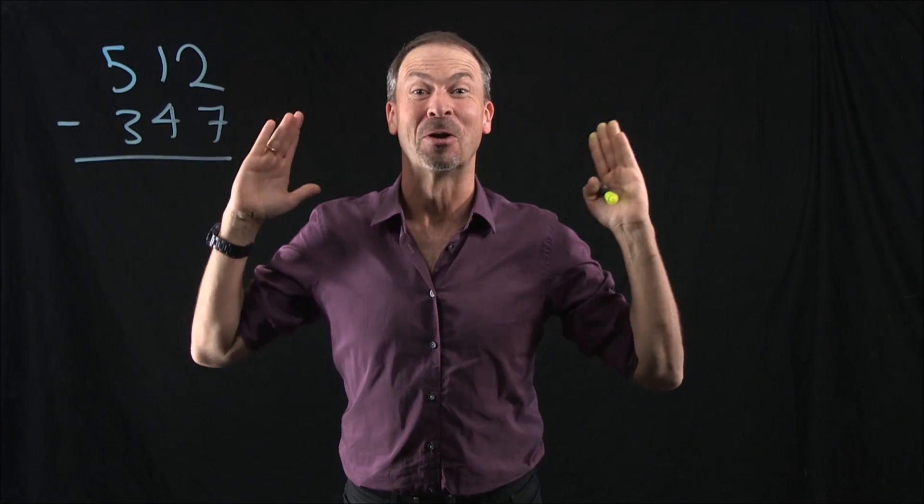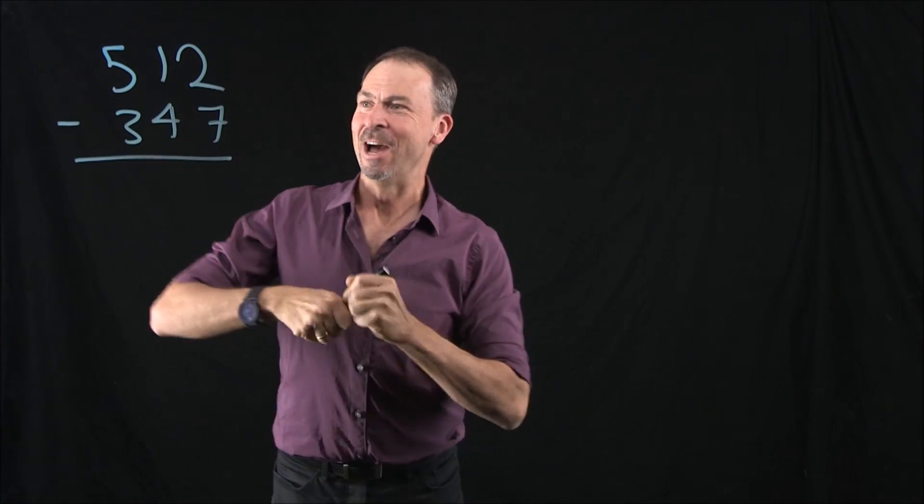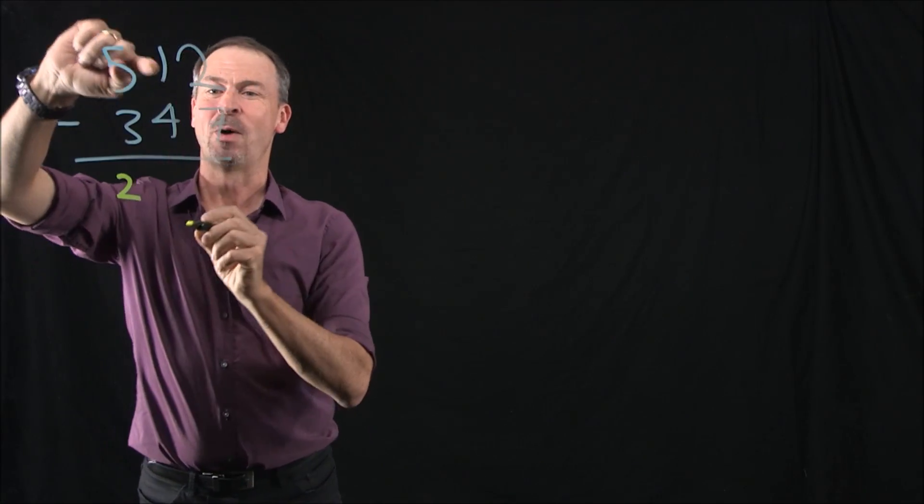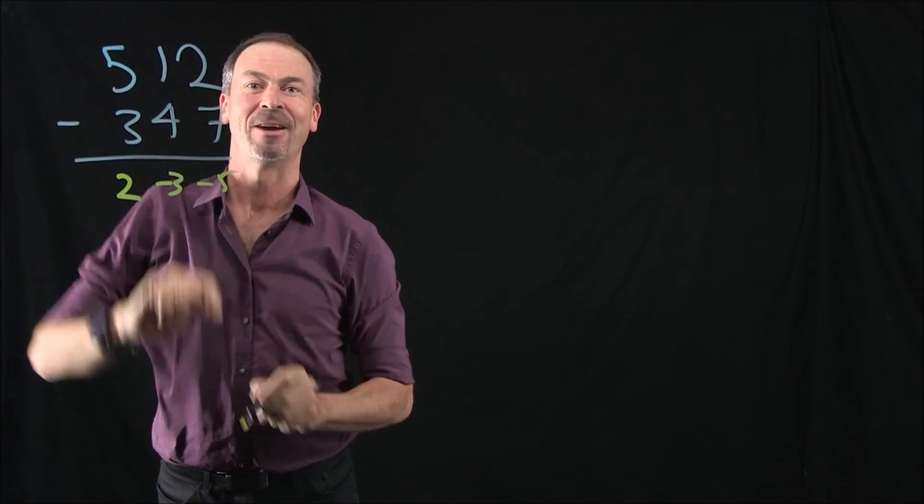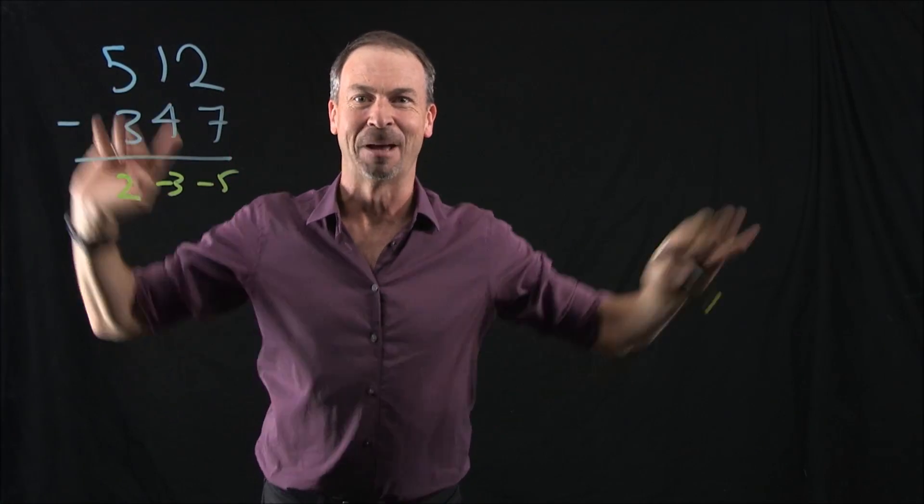Well, you know what? I'm just going to do it. I'm just going to go left to right as I want to do. Okay, 5 take away 3 is 2, 1 take away 4 is negative 3, 2 take away 7 is negative 5. There it is. The answer is 200 negative 3t negative 5. Done.